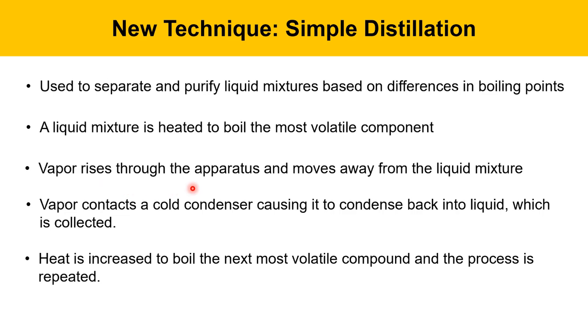The vapor rises through the apparatus and moves away from the liquid mixture that contains higher boiling materials. The vapor then contacts a cold condenser that causes it to condense back to a liquid, which then is collected. And then the heat is increased to boil the next most volatile compound, and the process is repeated. So sequentially collecting liquids of higher boiling points from a mixture of several liquids is how it's used.